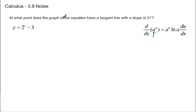At what point does the graph of the equation have a tangent line with a slope of 21? So what we want to do is we want to find y prime. And to do that, notice it's 2 to a power of t. So 2 to a power of t. What does that look like? Well, it looks like 2 to the t times the natural log of a, which is 2, and times the derivative of the t, which is 1. And then plus the derivative of 3, which is 0.